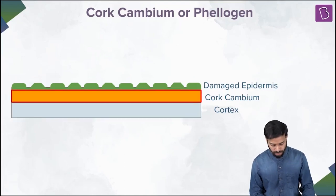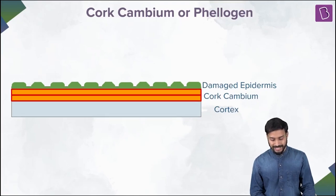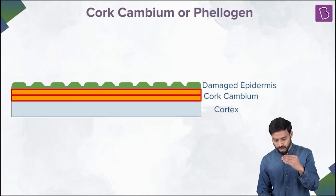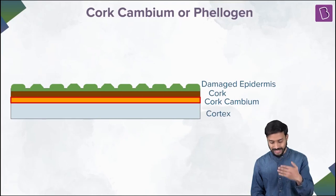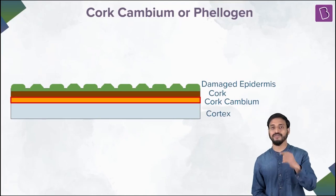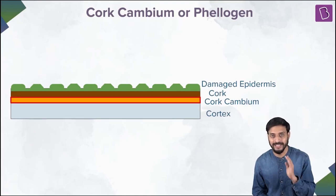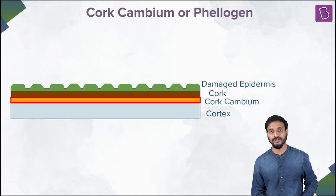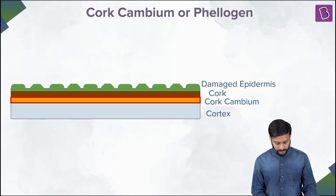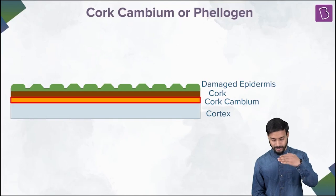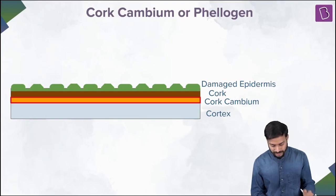The cork cambium expands outwards and it cuts off towards the periphery, which results in the formation of the layer called the cork. So the cork cambium, because it has cut towards the periphery, results in the formation of the cork.